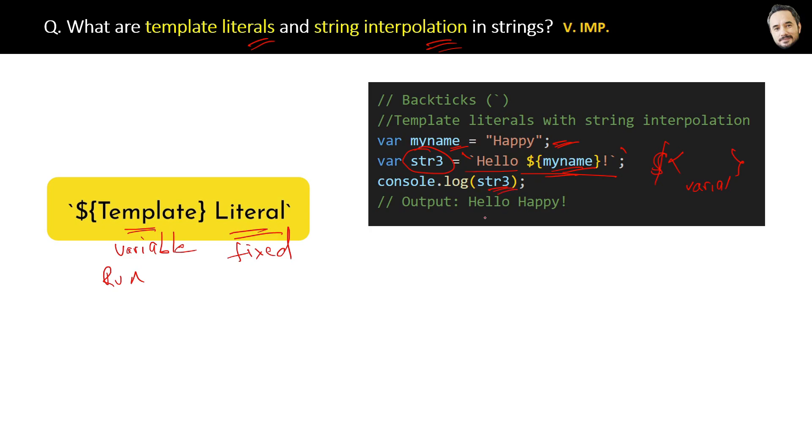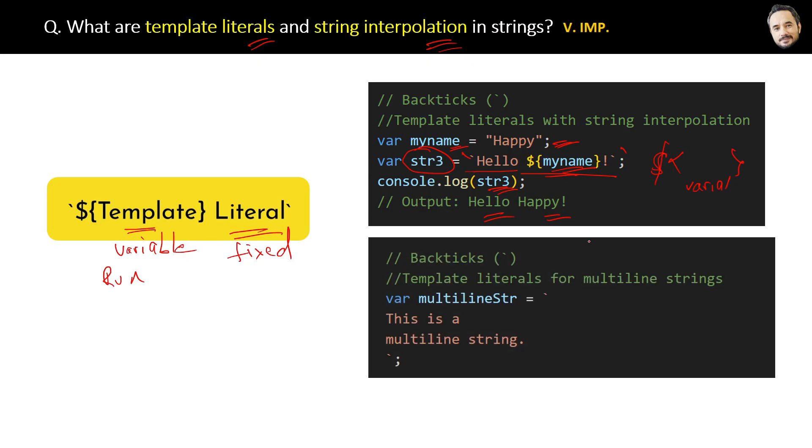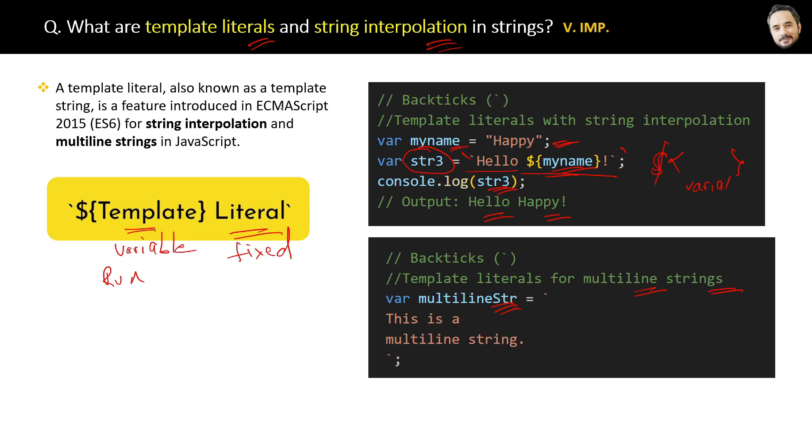Also, template literals can be used to store multi-line strings like this. Finally, the definition of the template literal: a template literal, also known as template string, is a feature introduced in ECMAScript 2015 ES6 for string interpolation and multi-line strings in JavaScript. That's it.